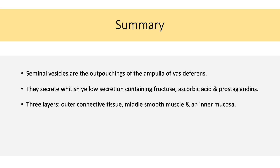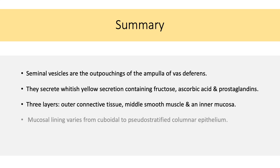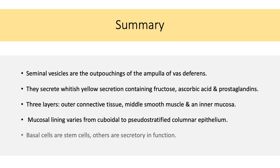We see three layers in its wall: an outer connective tissue layer, a middle smooth muscle layer, and an inner mucosa. The mucosal lining varies from cuboidal to pseudostratified columnar epithelium. Basal cells are stem cells, whereas the other cells are secretory in function.